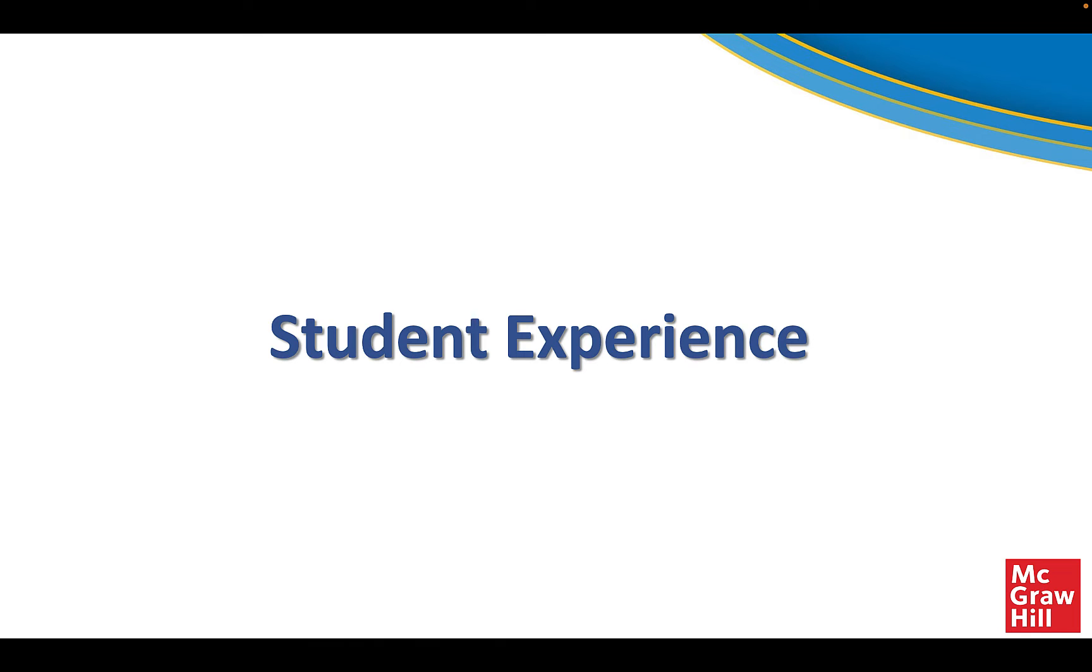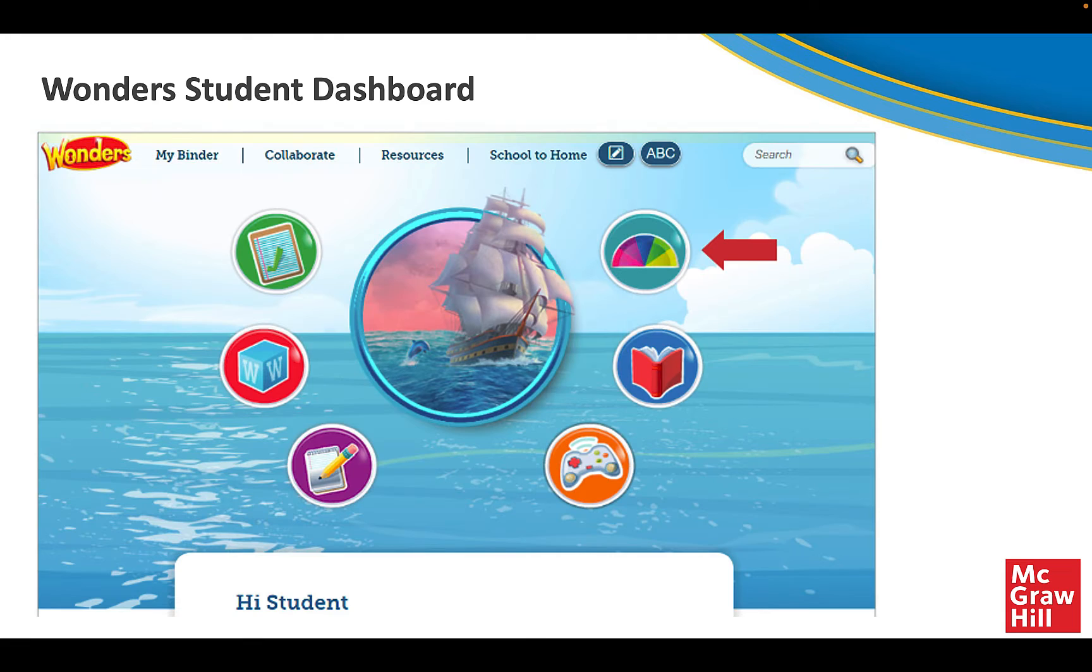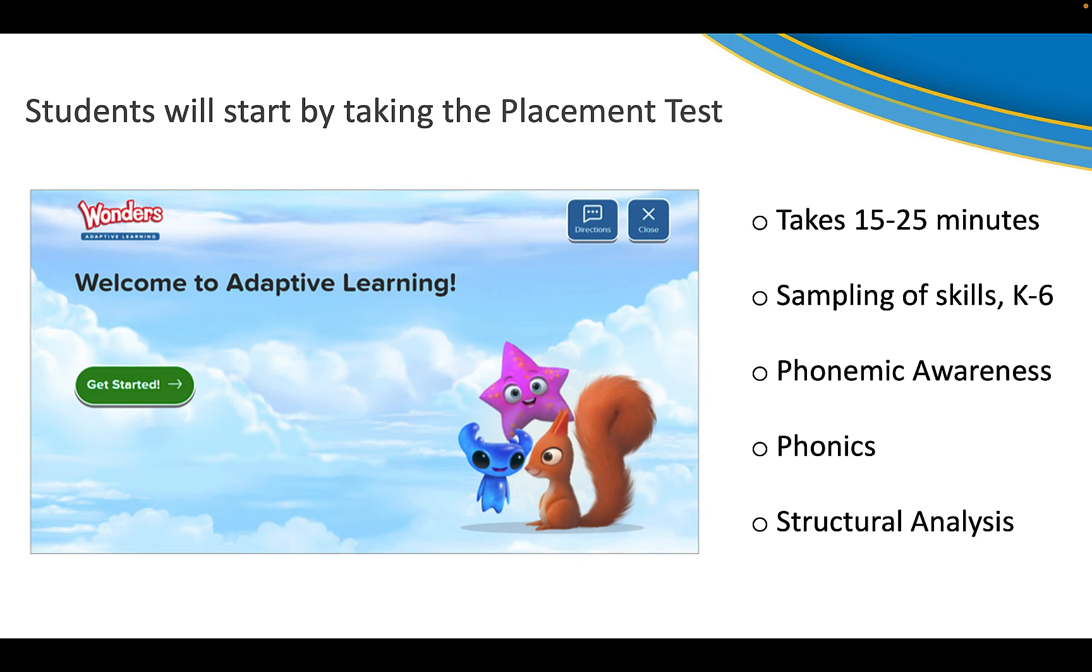Now let's take a look at the student experience. When students log in to their Wonders student dashboard, they will see a new icon. This icon is a half circle, sort of a rainbow shaded picture. Students click on this to access the Wonders Adaptive Learning System. The first time they click that icon, students will start by taking a placement test. Depending on the age of the student, time of year, and ability level, this placement test may take 15 to 25 minutes. Students will be presented with a sampling of skills within those three main topics.